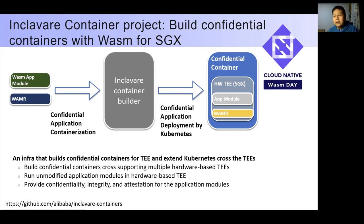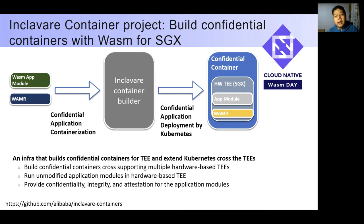The Inclave project is an infrastructure that builds confidential containers for TEE and extends Kubernetes across different TEEs. As the diagram illustrates, the Inclave container can build WASM modules and the WASM runtime into a confidential container using new plugins and components. These confidential containers can be orchestrated by Kubernetes across TEEs, enabling WASM-based applications to run without application modifications.